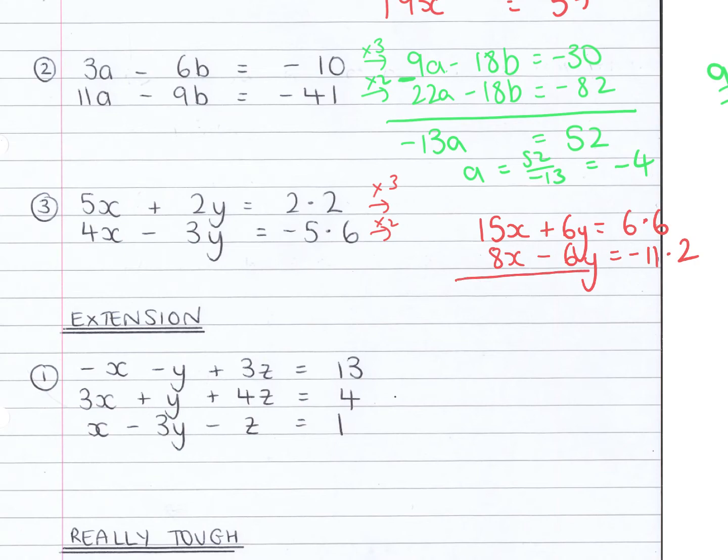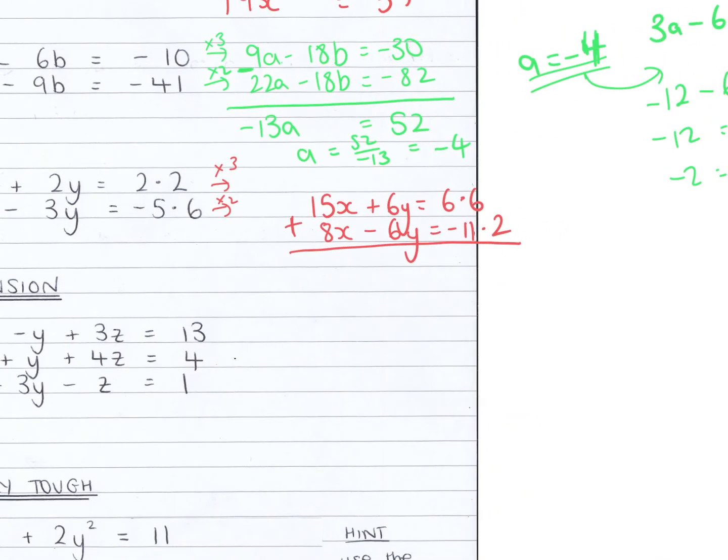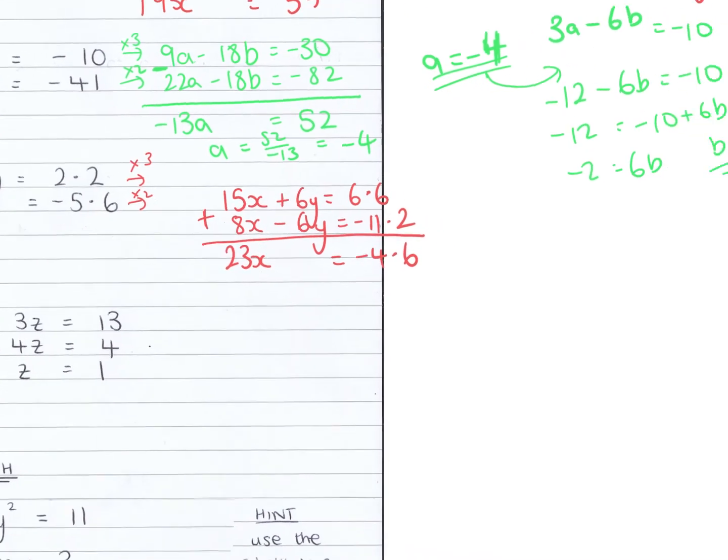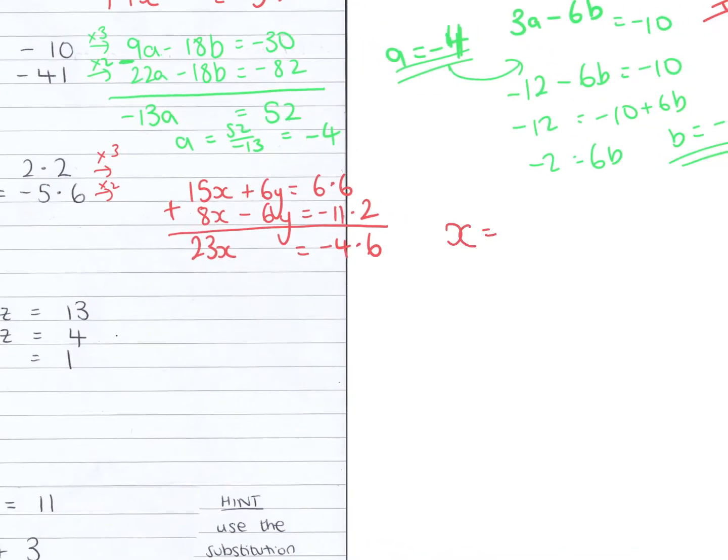Okay, this time I'm going to add them though, because I've got plus 6y minus 6y. So 15x plus 8x is 23x. And 6.6 plus minus 11.2 gives minus 4.6. So x in this case must be minus 4.6 divided by 23, which is minus 0.2.